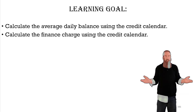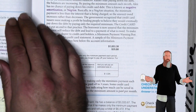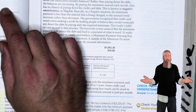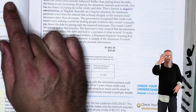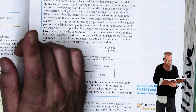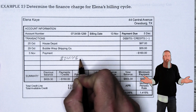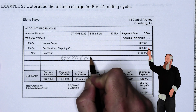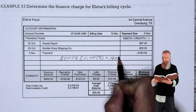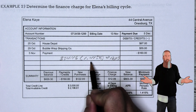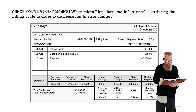Now let's calculate the finance charge using the credit calendar. Because Alina did not pay off her balance in full for the previous month, she'll be paying a finance charge this month. Once the average daily balance is computed using the calendar, we find the finance charge using the average daily balance and the monthly periodic rate. The average daily balance is $854.46. Multiplying by the monthly rate of 1.415% (which is 0.01415), she will be paying a finance charge of $12.09.